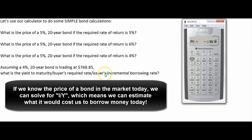If we know the price being paid for a bond and we know its terms, we can figure out the discount rate the buyer used — in other words, we can solve for the yield to maturity, which is the buyer's required rate of return. This helps us find our incremental borrowing rate. Companies don't issue bonds every day, and interest rates and credit ratings change, so if we want to know what it would cost to borrow today, we look at the market price of our existing bonds and solve for I. For example, a twenty-year bond (N=40) priced at $768.85, paying twenty dollars twice a year with a face value of one thousand dollars: we compute I, multiply by two, and find the buyer's required rate of return is six percent — meaning we'd have to pay six percent to borrow today.